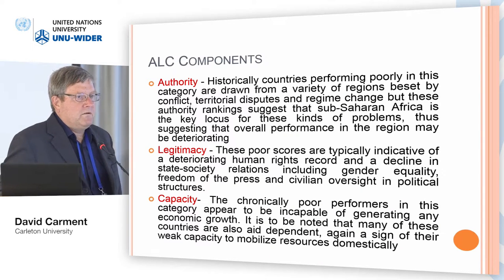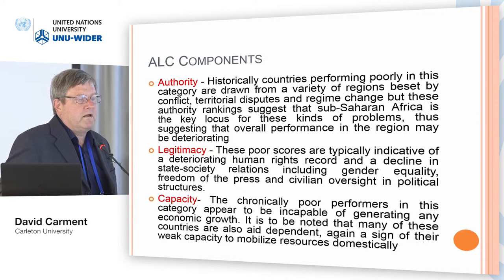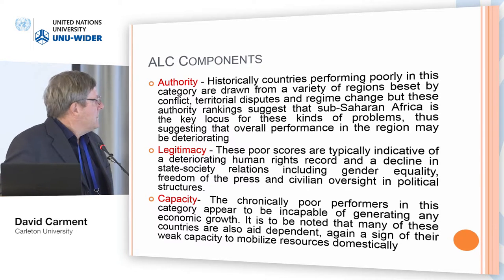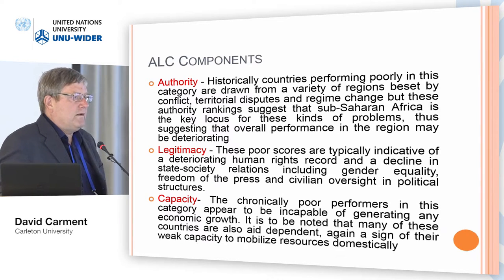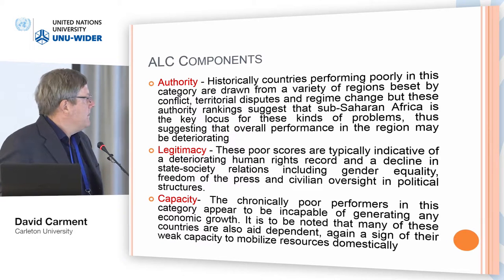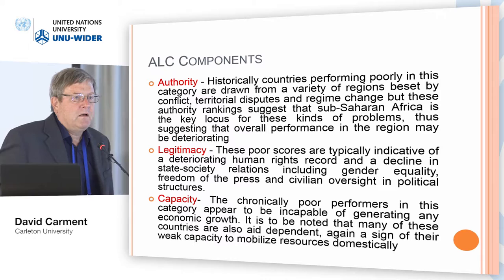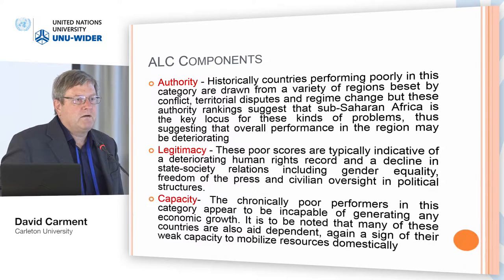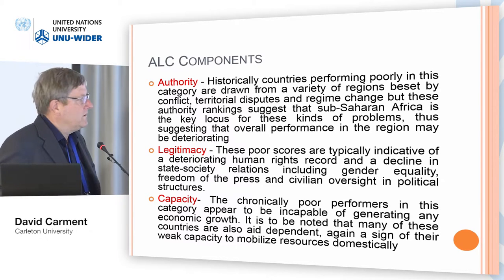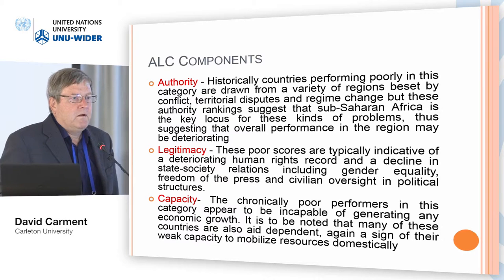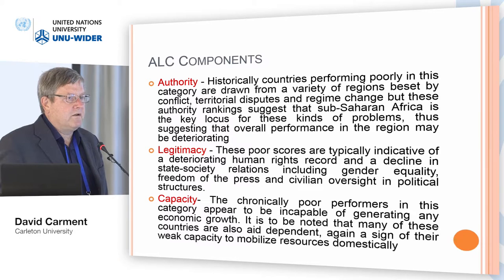We dissect the overall fragility index into three component parts: authority, legitimacy, and capacity, each tapping into different dimensions of statehood. Authority typically specifies how a regime is able to control both its people and its territory — the classic Weberian interpretation of statehood. When a government is challenged by a group, we see authority weaknesses, and countries experiencing conflict tend to perform more poorly on the authority scale.